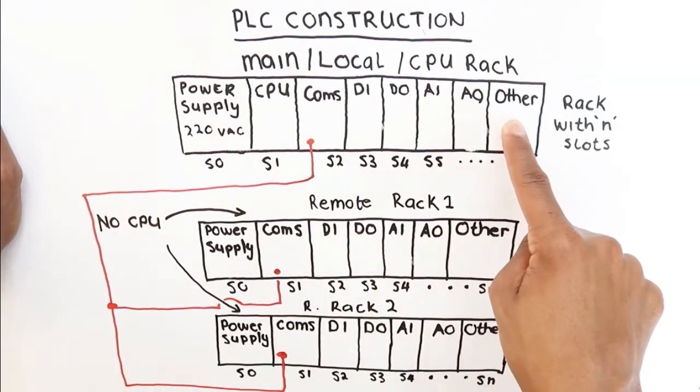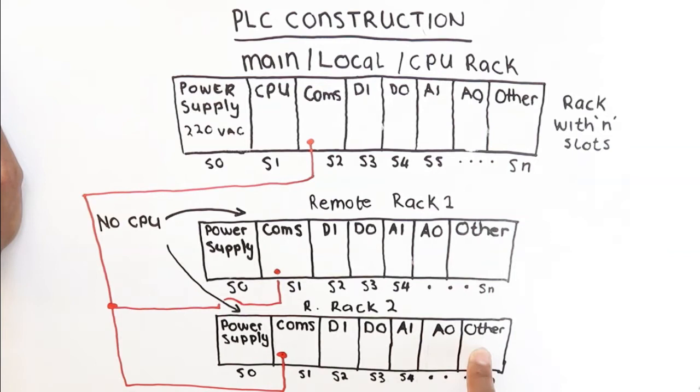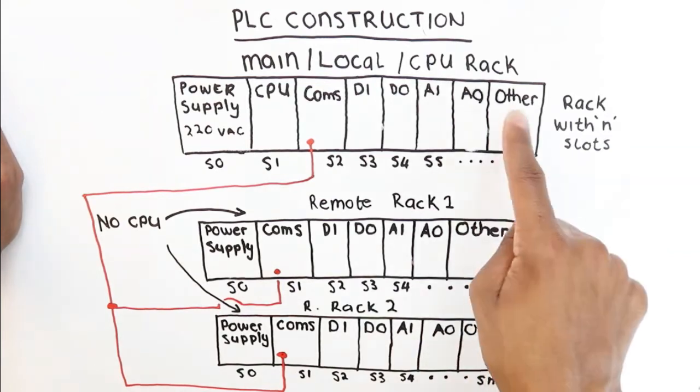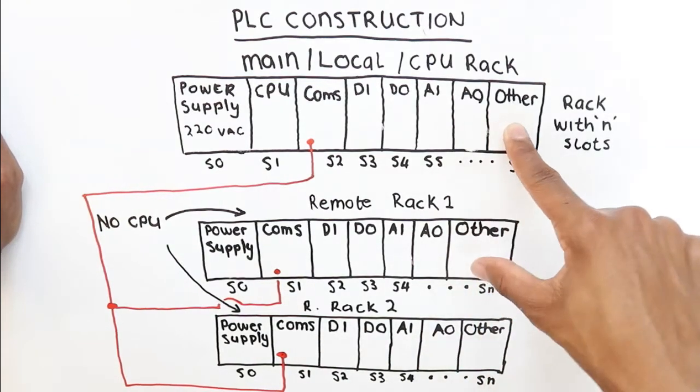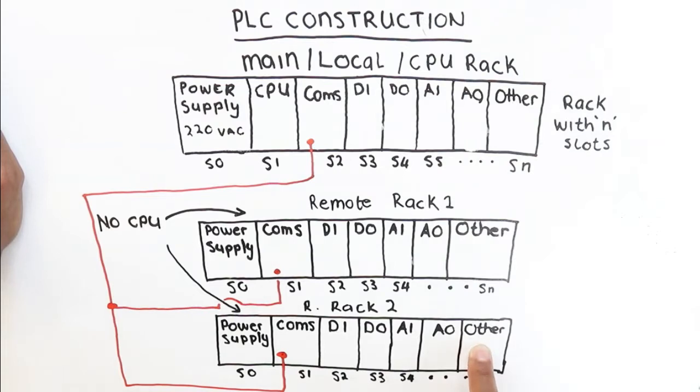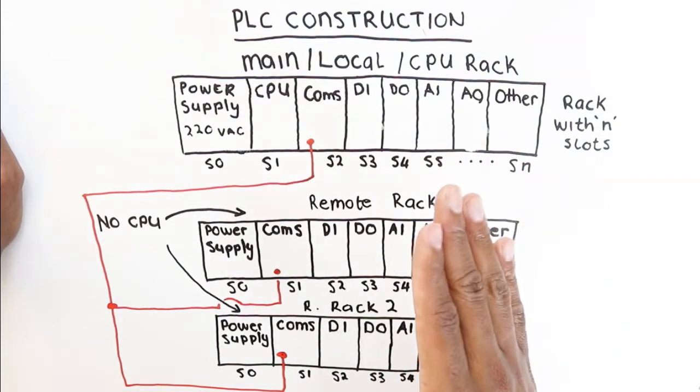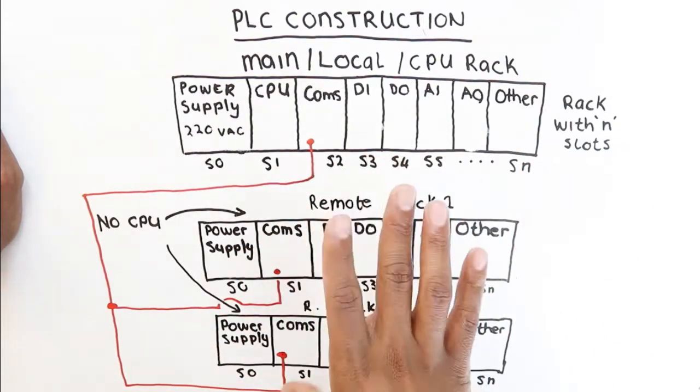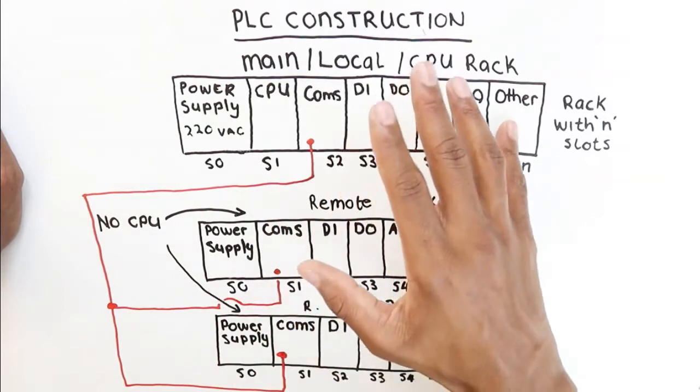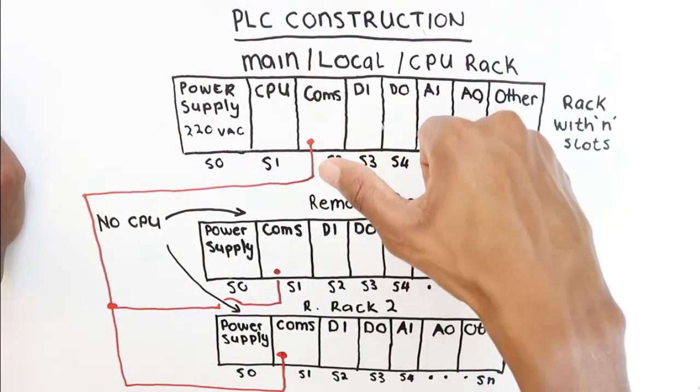Another thing that I'll touch on is the other cards, what they do and what they are. If you have other equipment that you want to interface with your PLC or control from your PLC, say a VSD from another manufacturer, then you'd have a particular card for that VSD which can be slotted onto this main rack.